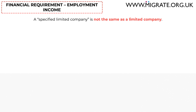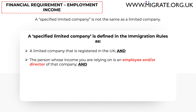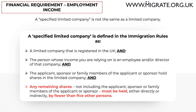A specified limited company is not necessarily the same as a limited company. Whilst the specified limited company will always be a limited company, a limited company will rarely be a specified limited company. A specified limited company is defined in the immigration rules as: one, a limited company registered in the UK; two, the person whose income you are relying on is an employee and/or director of that company; three, the applicant, sponsor, or family members hold shares in the employing company; and four, any remaining shares must be held either directly or indirectly by fewer than five other persons.